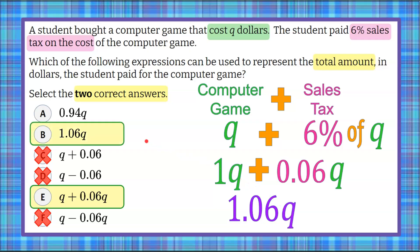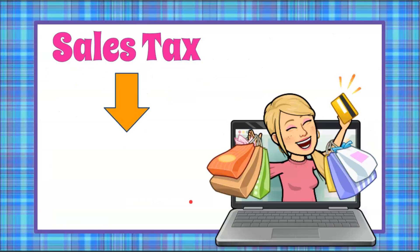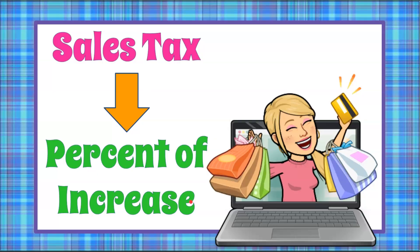So our two correct answers are B and E. We're going to pay 106% of the computer game — 100% of the computer game plus 6% sales tax as a percent of increase — or equivalently, the whole computer price plus 6% of the computer price. That is sales tax as we consider percent of increase, adding on to the original amount.